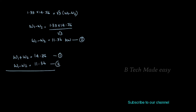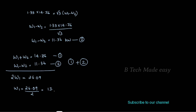Adding equation 1 and equation 2: W1 plus W2 plus W1 minus W2 gives 2·W1 equals 14.76 plus 11.36, which equals 26.12. Therefore W1 equals 26.12 divided by 2, which gives W1 equal to 13.06 kW.